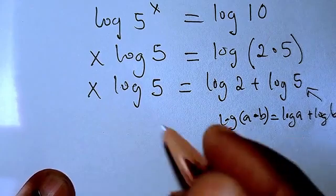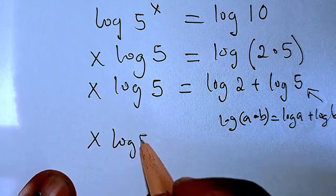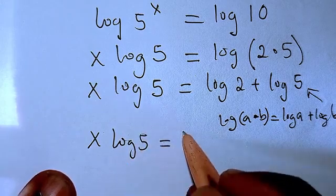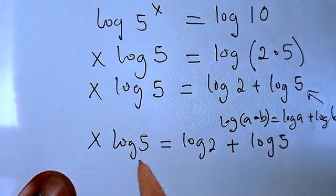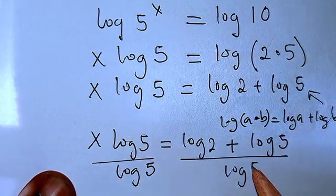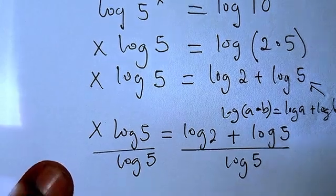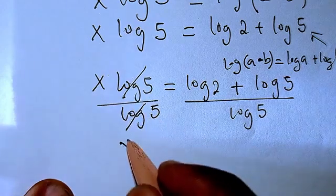We're going to have x log 5 equals log 2 plus log 5. Then dividing all through by log 5, I'm following. So now from there this cancels this, we have x to be equals log 2 divided by log 5.